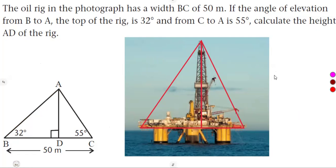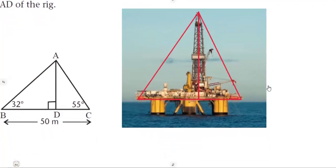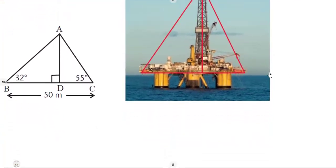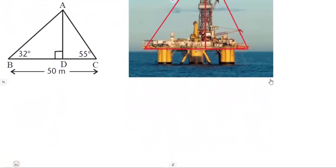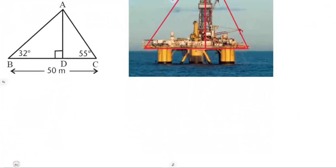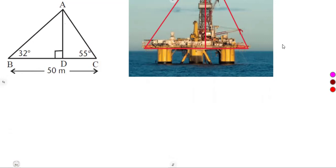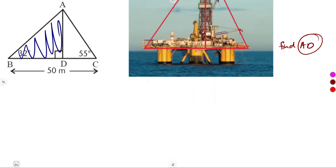The question is: how can we calculate the height AD? Remember angle of elevation — we covered this in grade 10 mathematics. At the end we said we are going to have a right-angled triangle. From those angles of elevation, we have properties that can be applied from a triangle — specifically, right-angled triangle ABD and also triangle ADC.